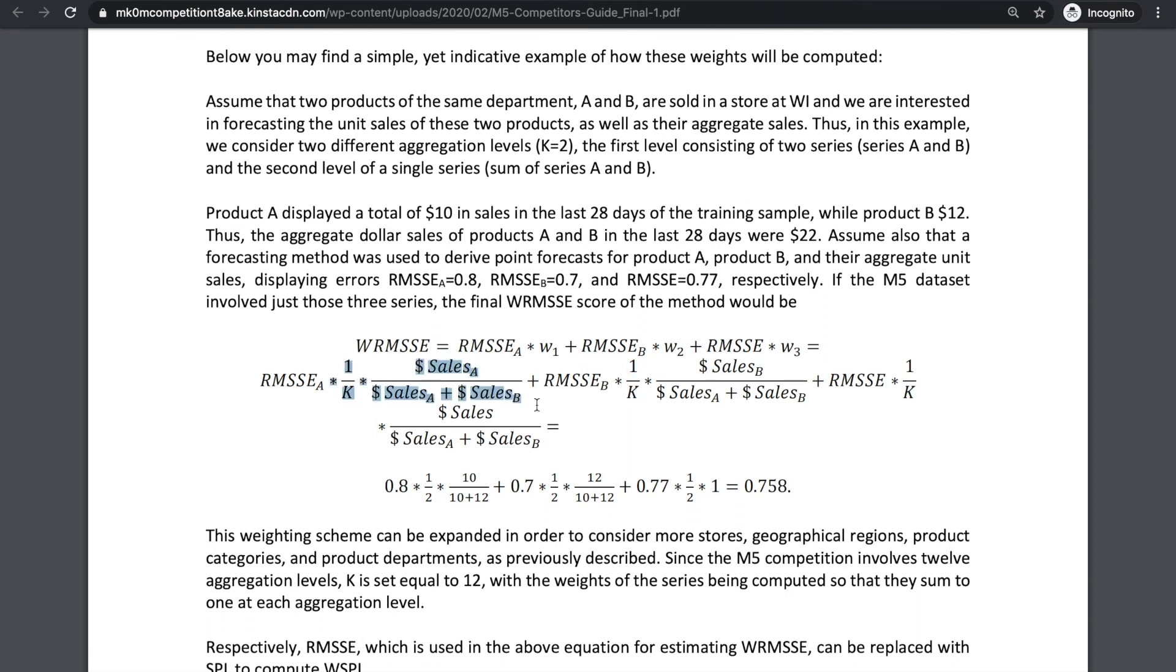Therefore, the final effective weight for each series is dollar sales of this series divided by the sum of dollar sales of all series in this hierarchy, then divided by the total number of hierarchies.